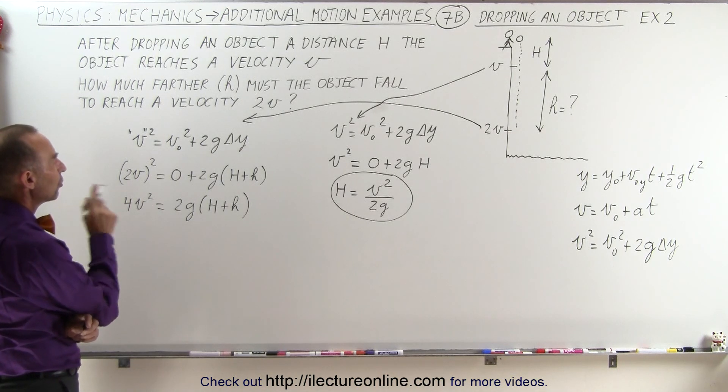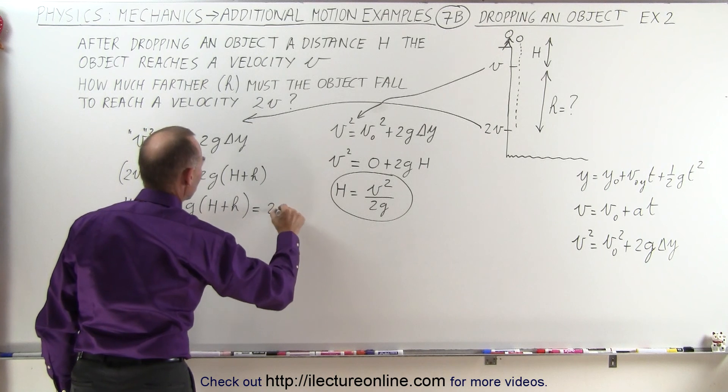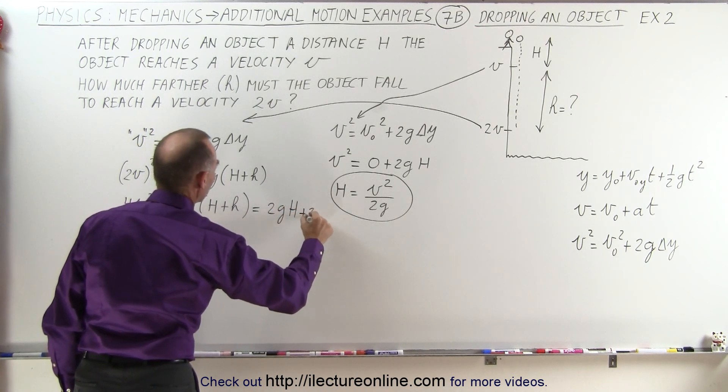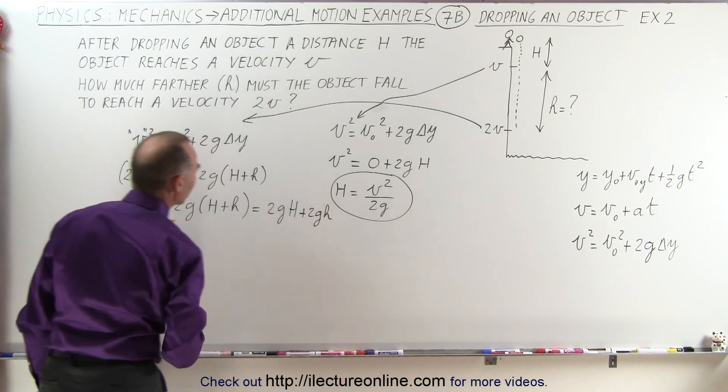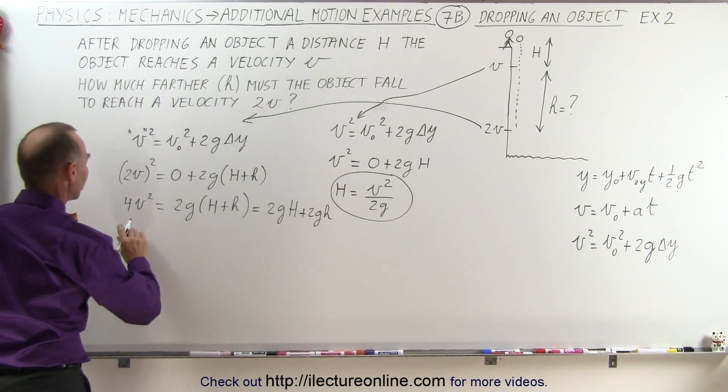And then I think the best thing to do would be to separate those two. Let's say that this is equal to 2g times big H plus 2g times little h. And since I'm looking for little h, what I'm going to do here is the following.